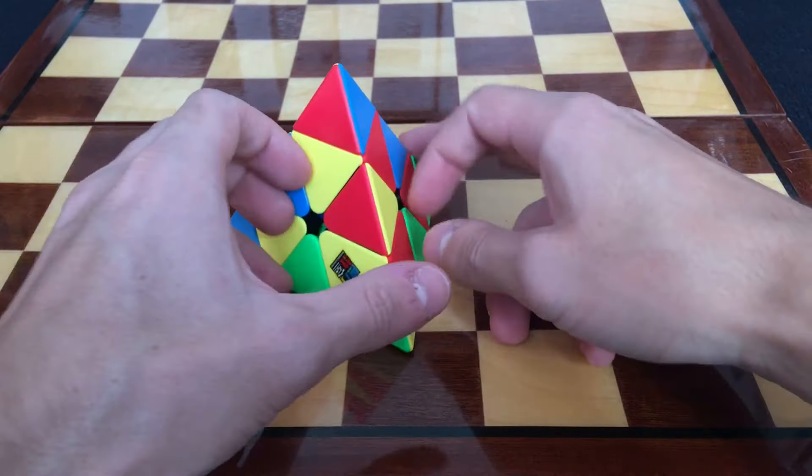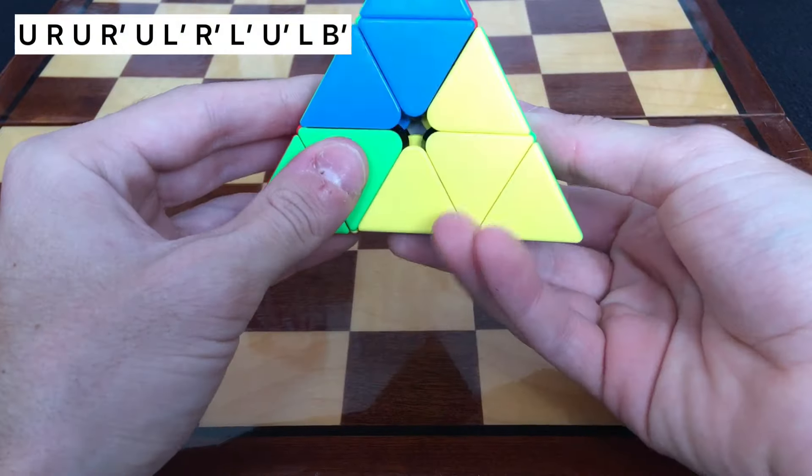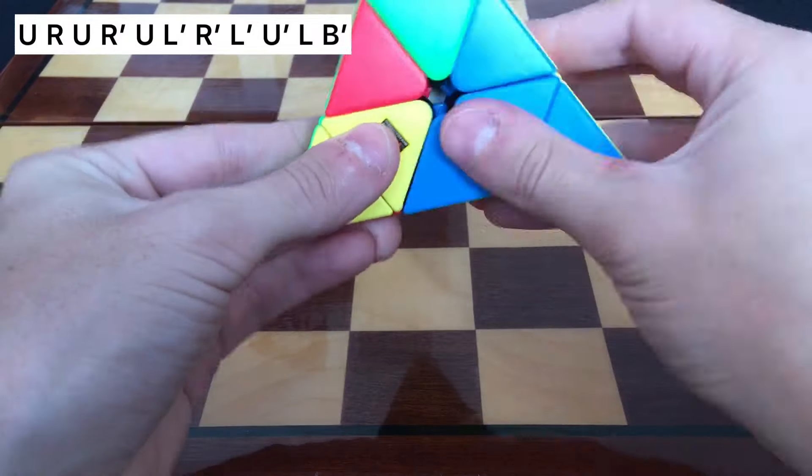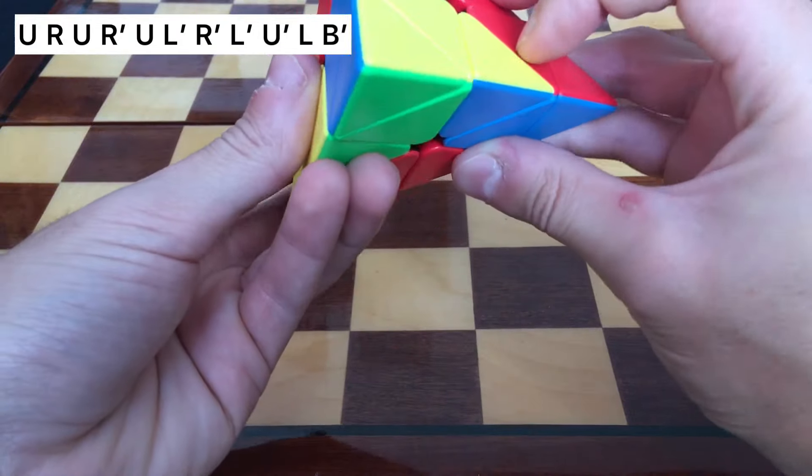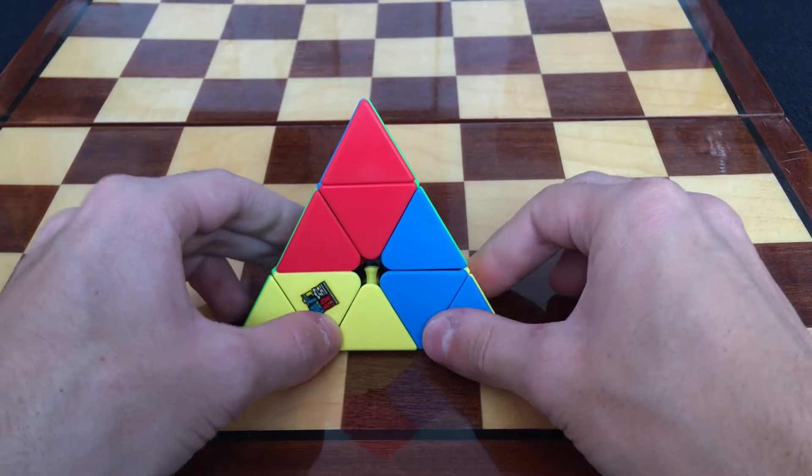The swirl: U R U R U R' U L' R' R' L' U' L Back'. What this does is it puts all three colors in three pieces on every side.